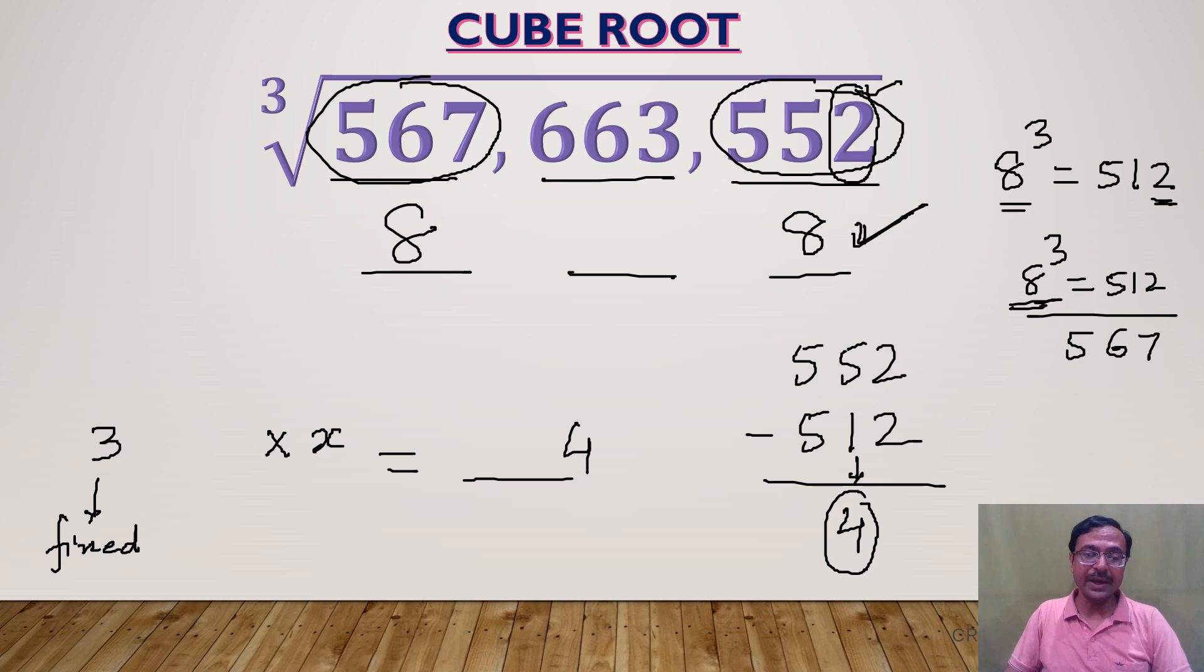And the square of the number which I have taken as the unit digit. The unit digit is 8, so 8 square comes here. Now 8 square is 64. 3 times 64 will end in 2. 3 sixes are 12, right? So this number ends in 2.